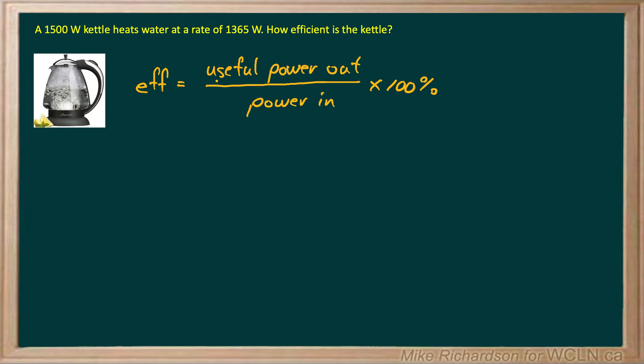So efficiency is always useful divided by input and we can use either energy or power since power is just the rate at which energy is transformed. So we're going to choose to use useful power out divided by power in.